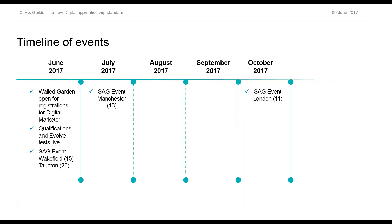What's coming up: this month you can register for Digital Marketer alongside the other standards, and register for qualifications administered through our online Evolve system. There are face-to-face events through our strategic advisory group: in Wakefield next week on the 15th, in Taunton on the 26th of this month, in Manchester on the 13th of July, and then in London on the 11th of October.